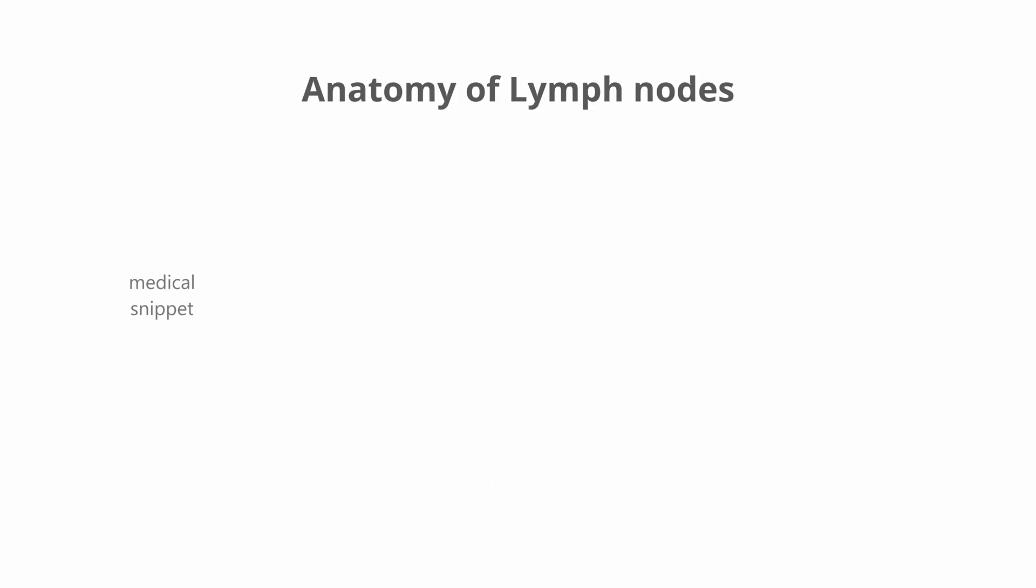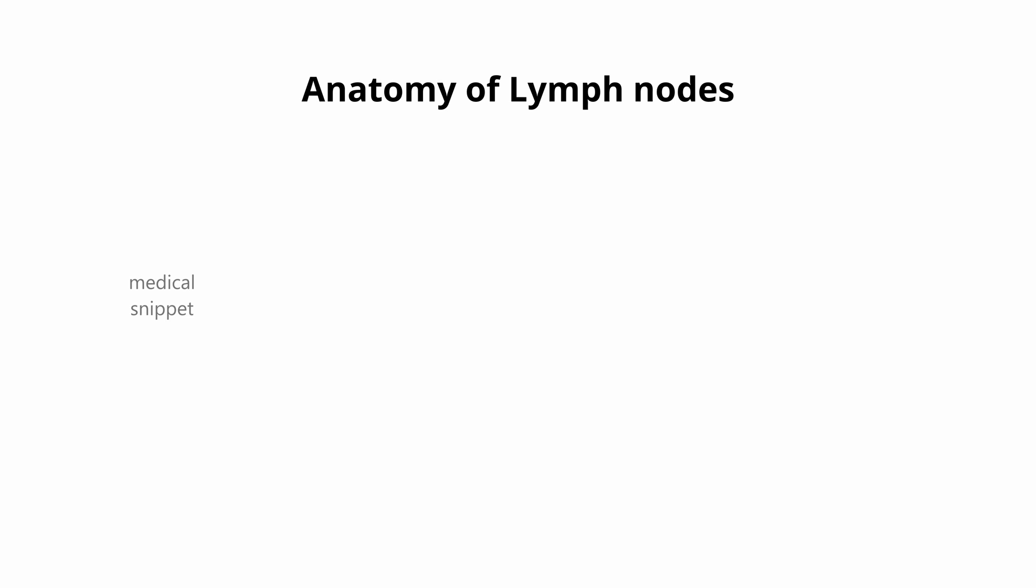Let's now concentrate on anatomy of lymph nodes. Lymph nodes are kidney-shaped organs, measuring 1-2 cm in size depending on the location it is present in the body. It has a concave hilum and a convex surface.